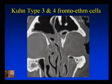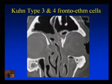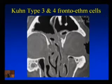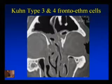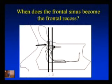For the Kuhn type 3 and type 4 cells — this patient has a good example of both. The Kuhn type 3 is the cell pushing through the floor of the frontal sinus from the frontal recess. The Kuhn type 4 looks like an isolated cell in the frontal sinus, but it isn't — it's not truly isolated, as I'll show you in a moment.